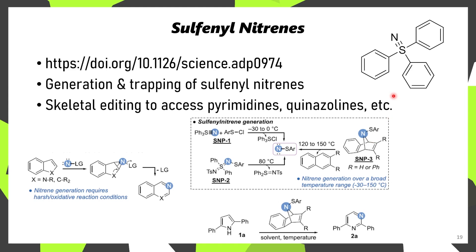One of the things you can do with these sulfenyl nitrenes is use them for skeletal editing. For instance, indoles and pyrroles can undergo ring expansion to the corresponding quinazolines, or in the case of pyrroles, you'll get pyrimidines.